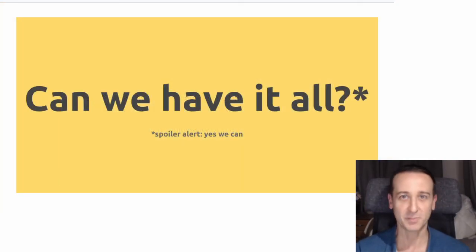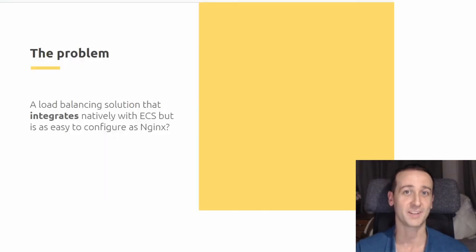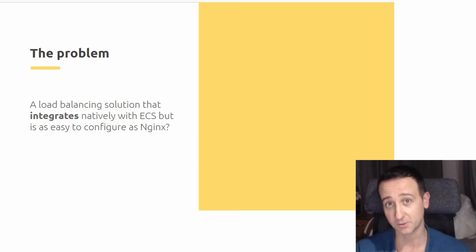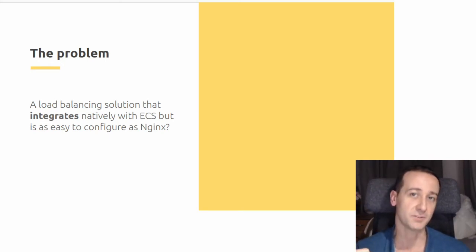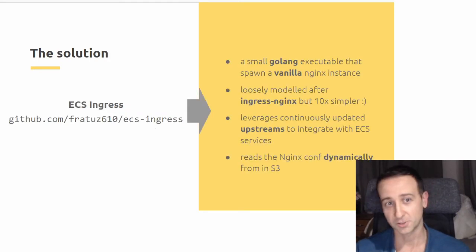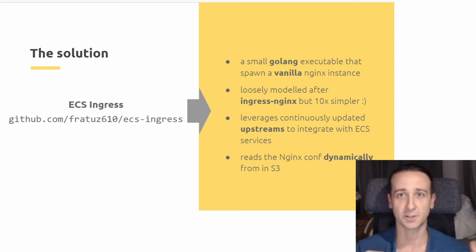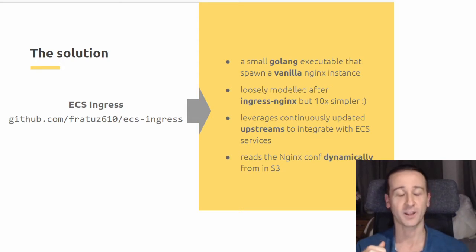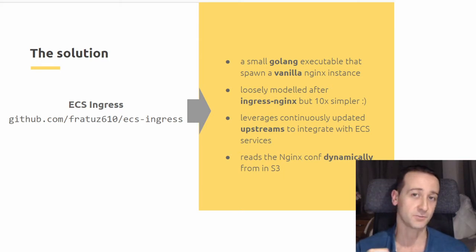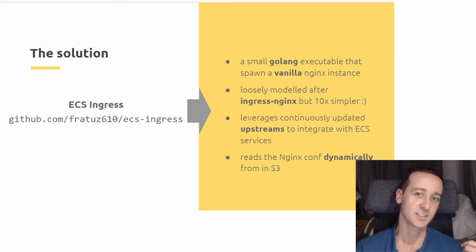So the question is: can we have it all? The spoiler is yes. The problem can be described as: do we want a load balancing solution that integrates natively with ECS and yet is as easy to configure as Nginx? The solution is ECS Ingress — an open source tool available on GitHub. It's a small Go executable that spawns a vanilla Nginx instance and manages its configuration for you. It is loosely modeled after ingress-nginx but is 10 times simpler — at most 200 lines of code.